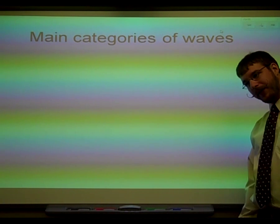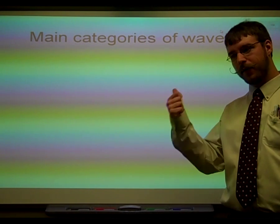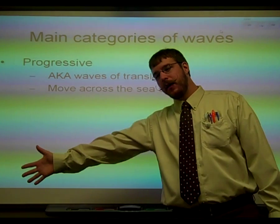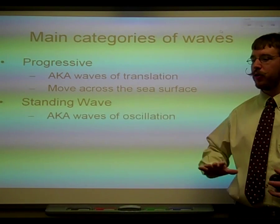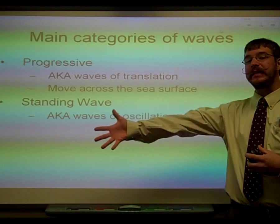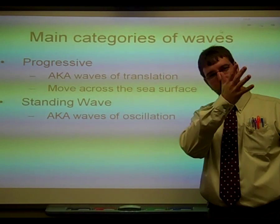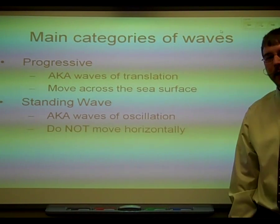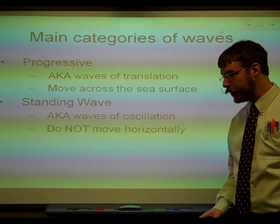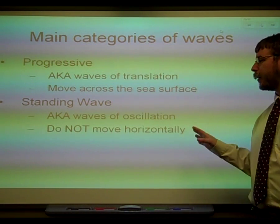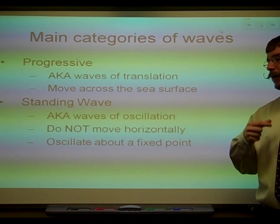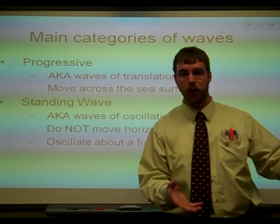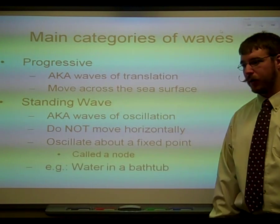There are a couple of main categories of waves. There's progressive waves, which are waves of translation — actually moving water across the surface. There are also standing waves, which move the water back and forth. They're called waves of oscillation. Think about El Niño and La Niña, but on a much smaller scale. This would be like if you're in the bathtub and you kick some water down to the end — it comes back. The water does not end up moving horizontally; it's oscillating around a fixed point, so you don't have any net movement.